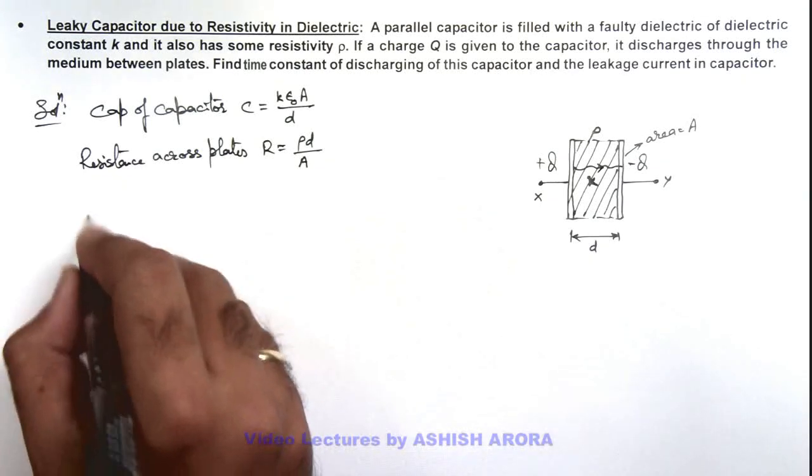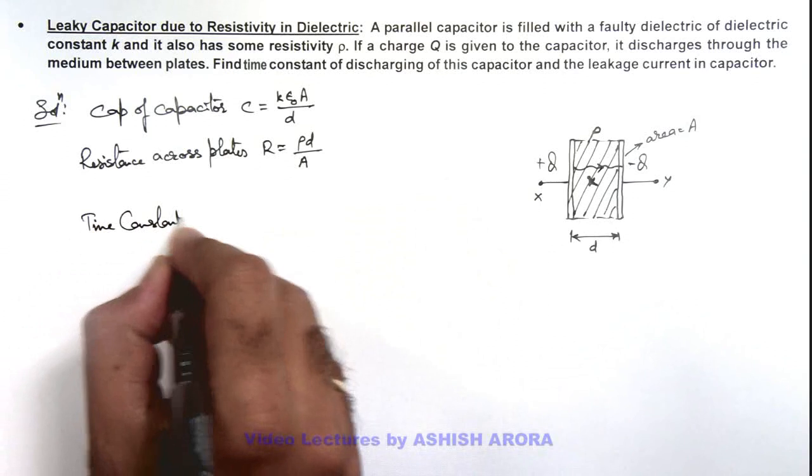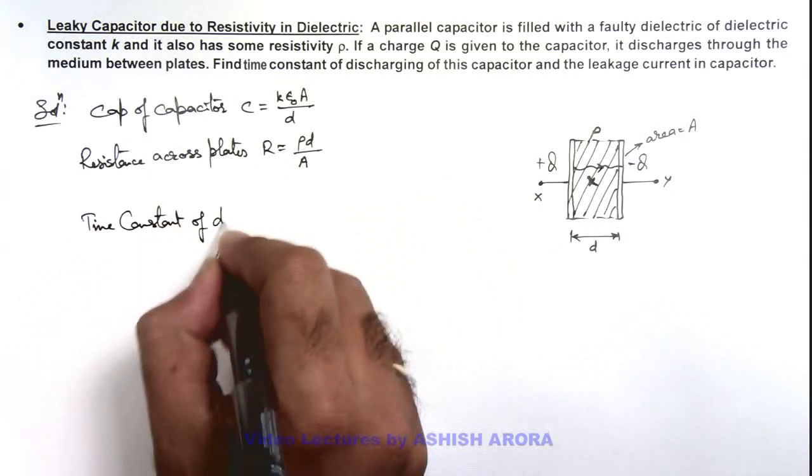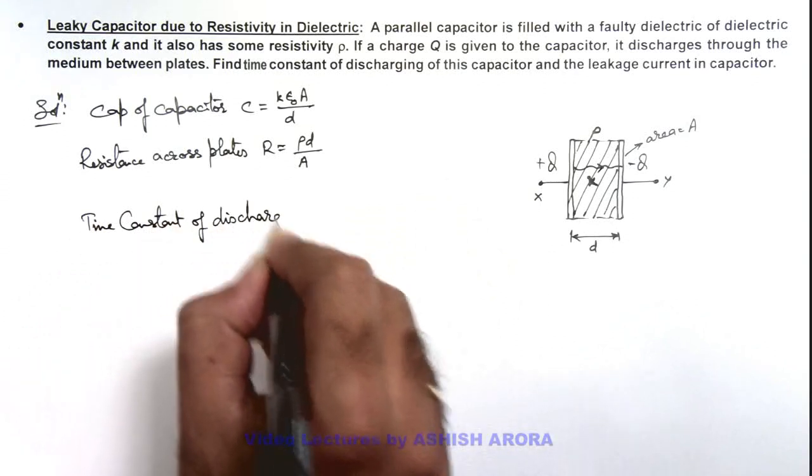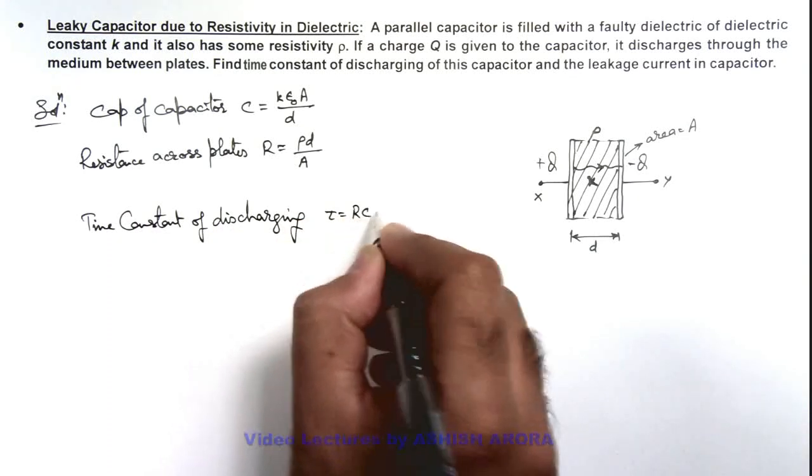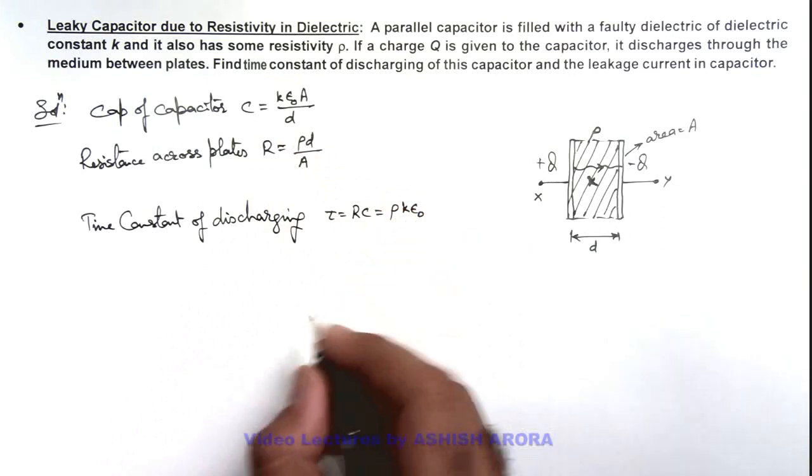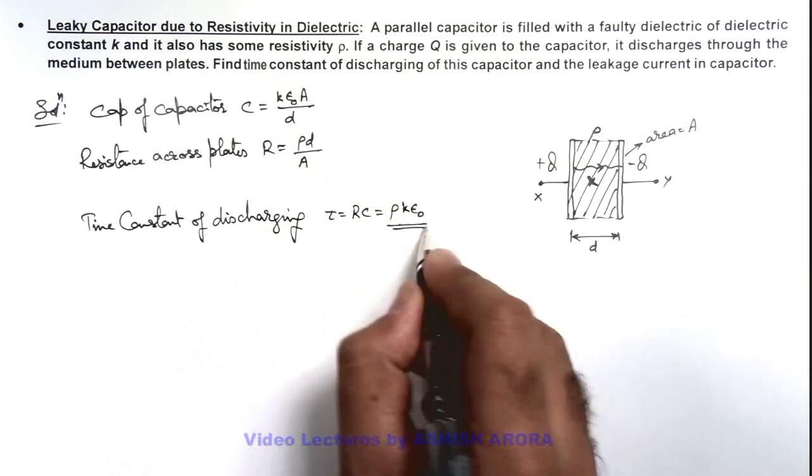So we can calculate the time constant of discharging which is given here as tau. This is R times C and if you multiply the two we are getting the result as rho k epsilon naught. That is the time constant of discharging.